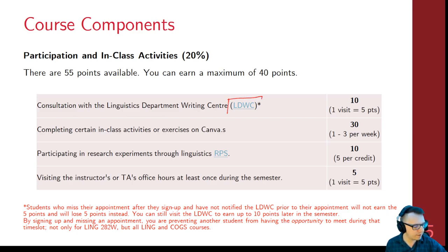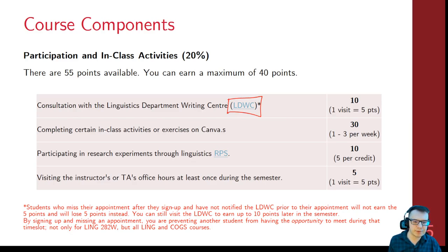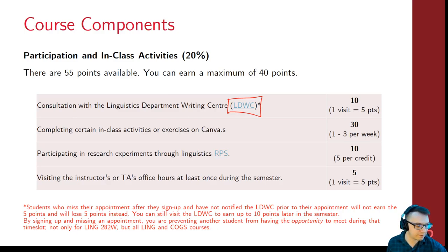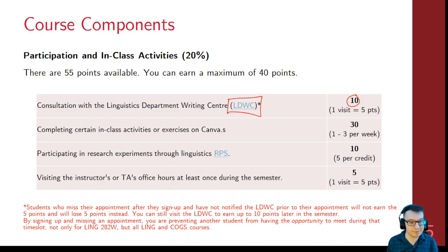The Linguistics Department Writing Center is available to all linguistics and cognitive science students outside of Ling 282. There's a signup sheet online — I'll post a link on the syllabus page. You can bring your work, whether a draft, a revised copy, a copy with feedback, or if you want to brainstorm a final paper. Every time you visit, you'll get five points, up to two visits for 10 points. They get really busy towards the end of the semester, so please see them as early as possible.